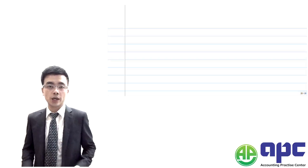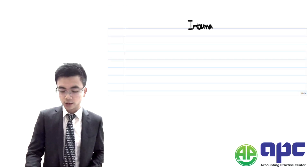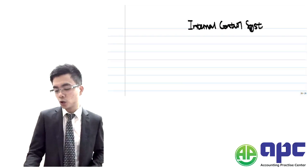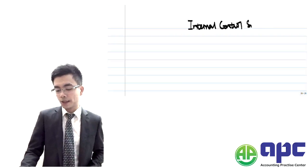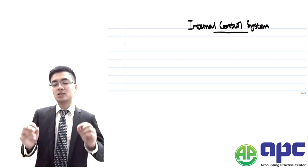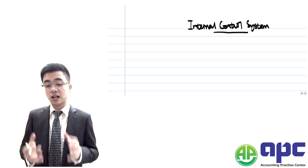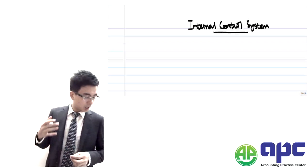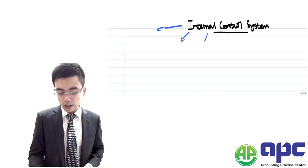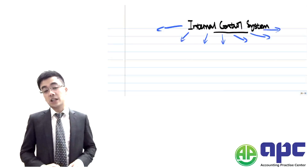In this section, we're going to look at something called the internal control systems. We are going to control the business, making sure that the business is operating effectively to continuously make money for the shareholders. What we're going to focus on today is seven aspects of the internal control systems.